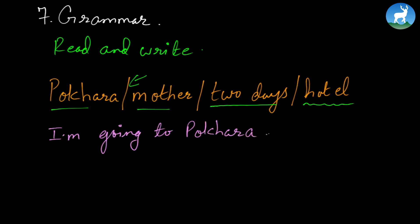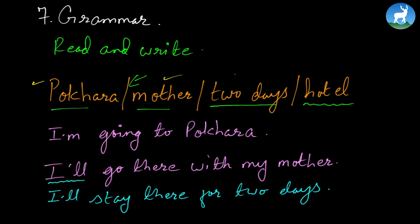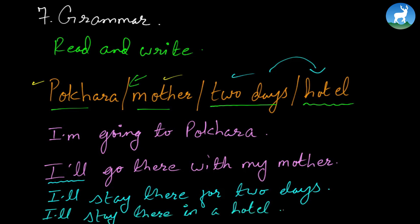I'm going to Pokhara. Now the second sentence says, I'll go there with my mother. Next will be, I'll stay there for two days. It's talking about a future event now. And finally, I'll stay there in a hotel.